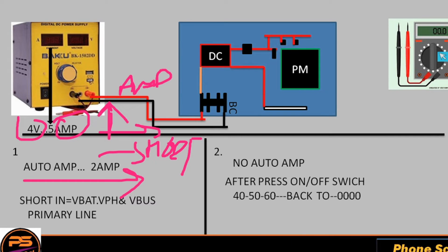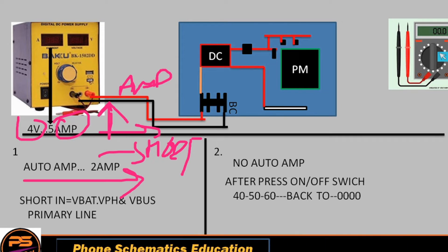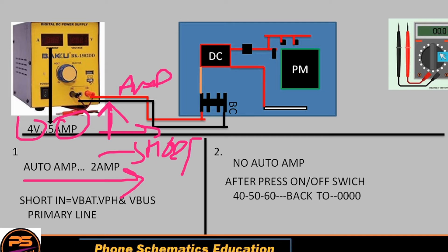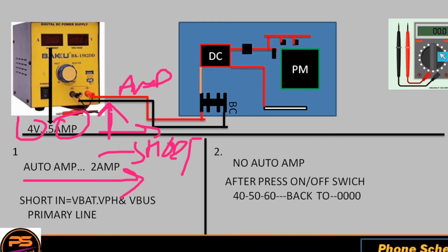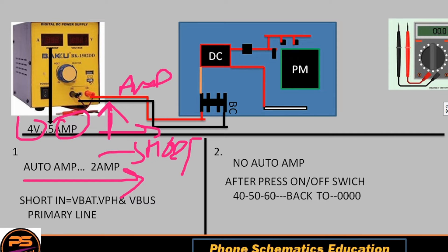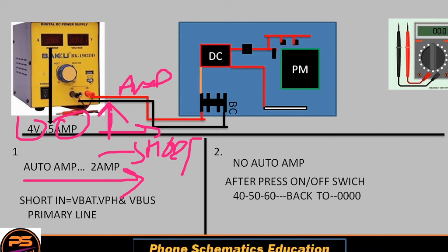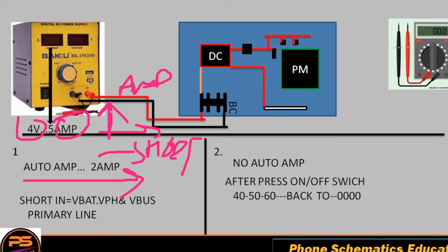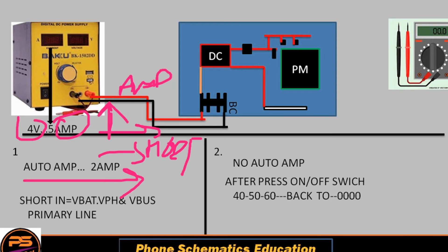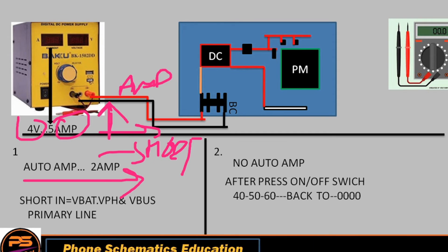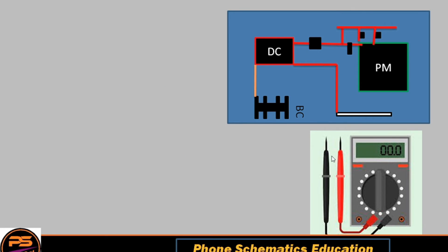VPH is an always-present voltage, so when VPH is shorted, the DC machine takes auto ampere. In the second case, if you don't have a thermal camera it's not easy to remove the short — that is a half-short, likely in an LDO line. There are methods to find and remove LDO shorting which I'll explain in another video. According to the DC machine: V-bus, VPH, and V-bat are primary lines; LDO lines are secondary lines.